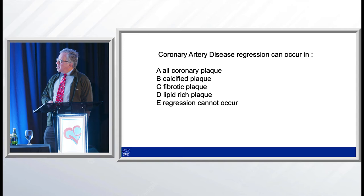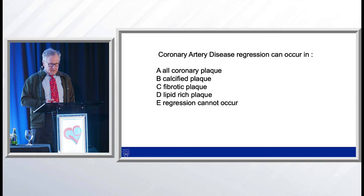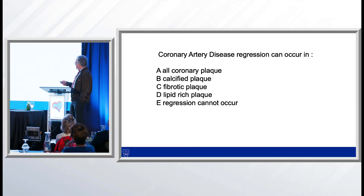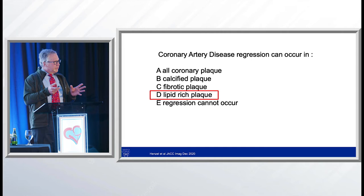So I'll ask a question: coronary artery disease regression can occur in A, all coronary plaque; B, calcified plaque; C, fibrotic plaque; D, lipid-rich plaque; or E, regression cannot occur. The answer is D — lipid-rich plaque — because calcified and fibrotic plaque can't change. It's the scar; it's like the cut on your hand from third grade. You're going to die with it, not because of it. But the lipid-rich plaque is what causes the problems, and it can actually regress.